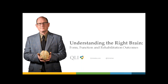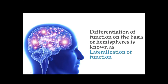To clarify differentiation of function on the basis of hemisphere, this is called lateralization. Basically, if one hemisphere versus the other is dominant in a particular function or ability, we talk about that hemisphere as being localized — having function within that area. What we're going to talk about within this presentation are functions that are predominantly located or reside within the right hemisphere of the brain.